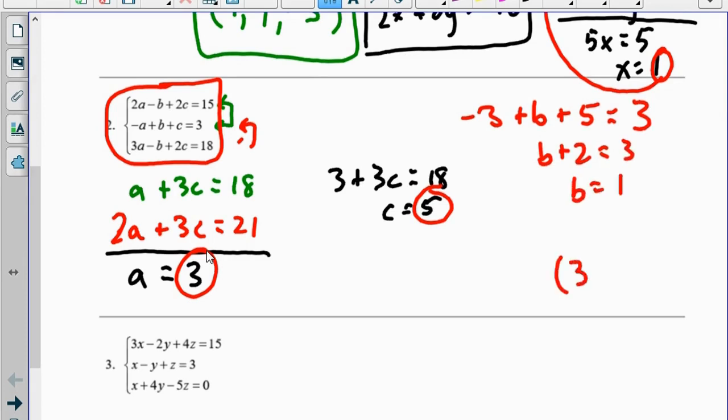So my final answer, written as an ordered triple, I'm going to go in alphabetical order, so a then b then c, 3 comma 1 comma 5.